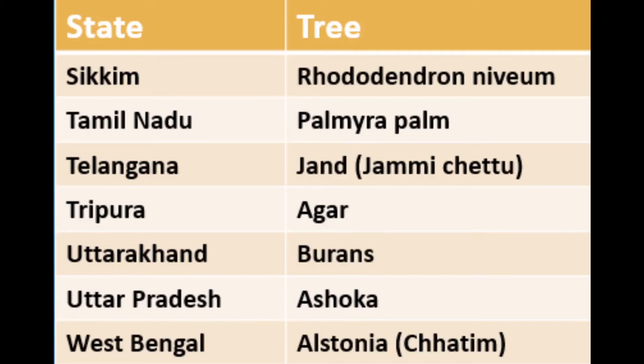Tripura: Agar. Uttarakhand: Buransh. Uttar Pradesh: Ashoka. West Bengal: Alstonia.